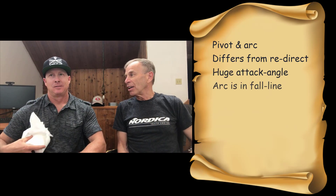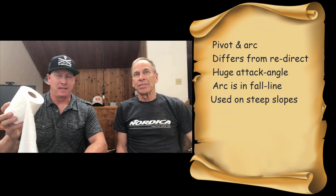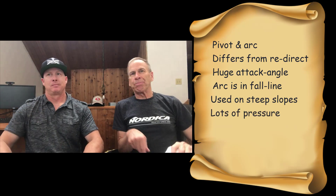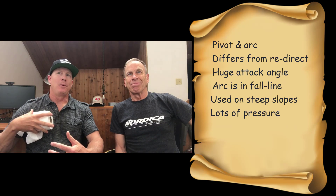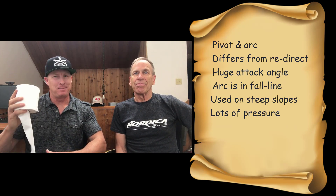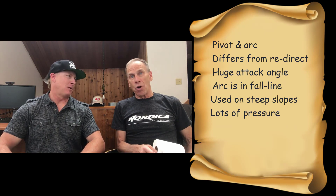Let's review. Stivit has two skills: a pivot and an arc. It differs from a redirect because it has a huge attack angle. Got an arc in the fall line — and on the steep slopes only. This results in ginormous pressure, which bends the ski in a tight arc. I'm Dan. And I am Ron. We are the Dan and Ron Show.